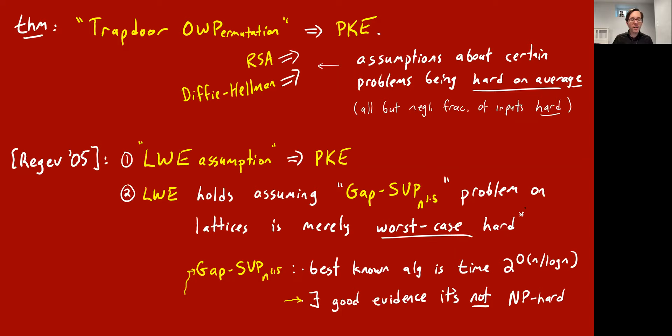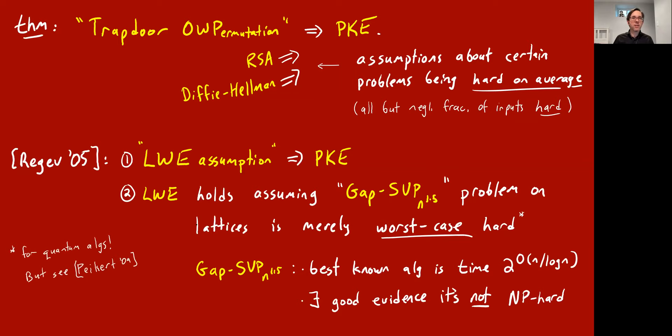Another amazing thing — almost like a weird coincidence — is that this result that LWE is true, assuming the gap SVP lattice problem is hard for efficient algorithms, required assuming it's hard not just for efficient classical algorithms but efficient quantum algorithms. So if you believe the best quantum algorithm for gap SVP still takes exponential time, then LWE holds and you get public key encryption. A subsequent paper by Peikert relaxed this to only need that classical algorithms cannot solve some lattice problem, though with different parameters.